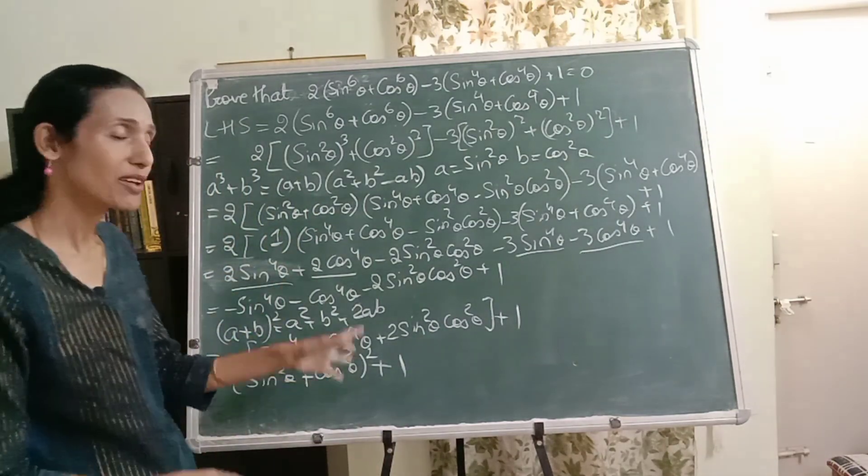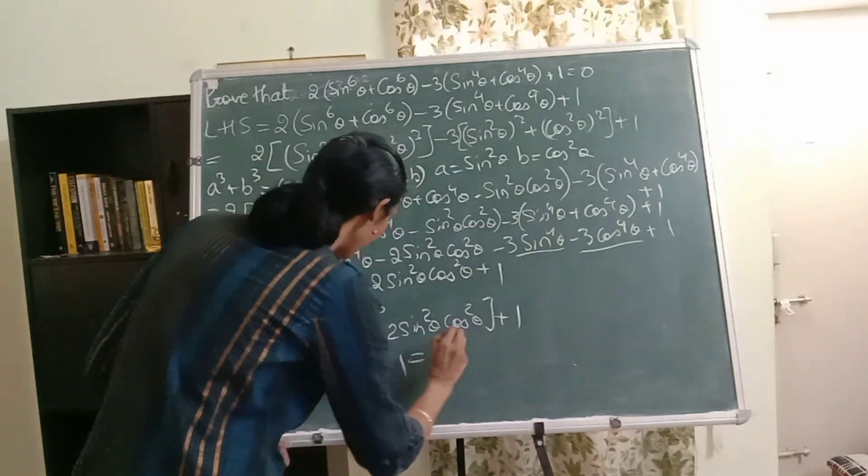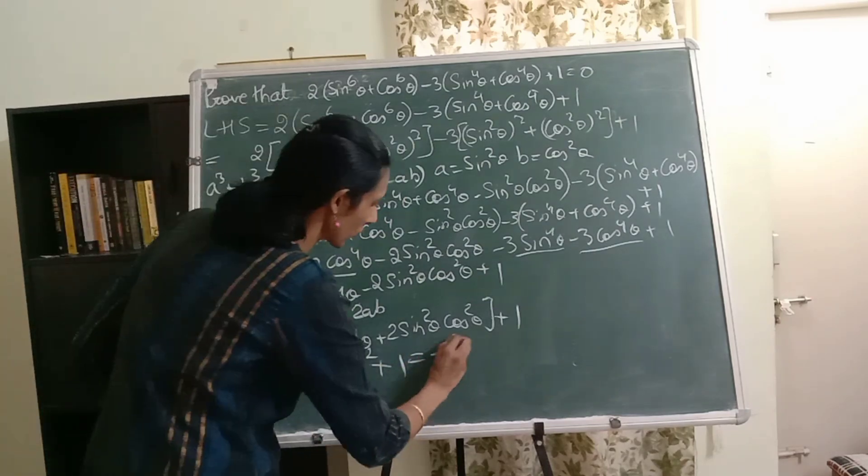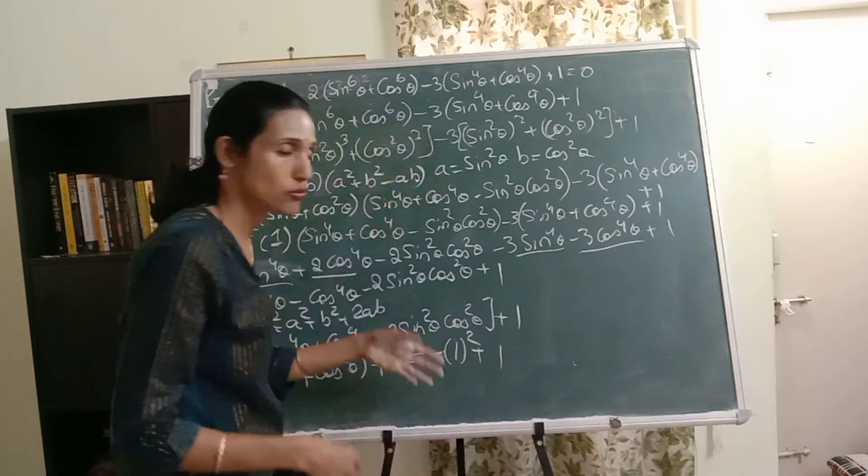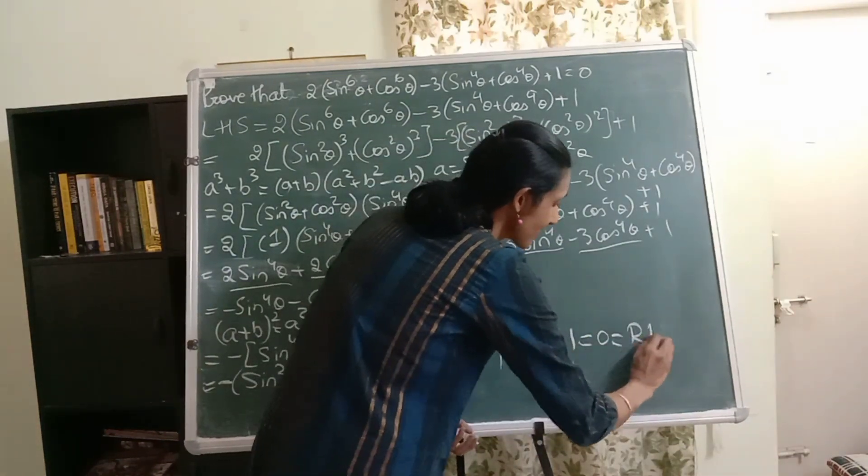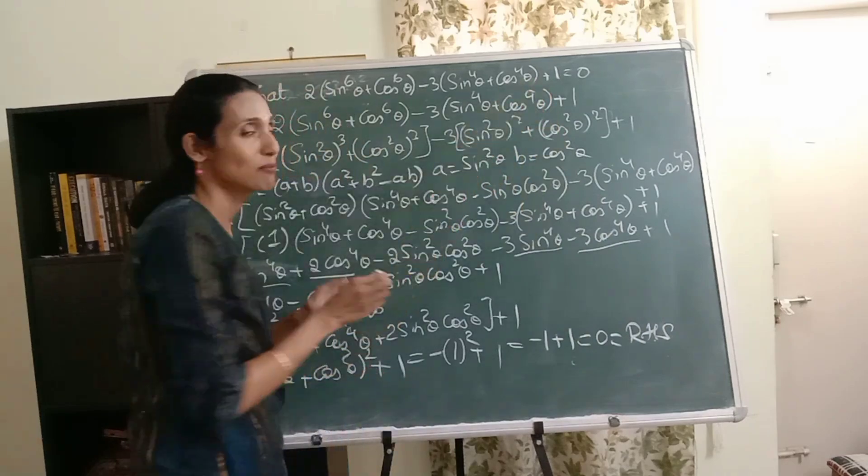Now again identities. What is it? Sine square theta plus cos square theta is 1. Surely that's great. Minus 1. And this is squared. Plus 1. Of course 1 square is again 1. So minus 1 plus 1 which is 0 which is my right hand side. That's amazing. Right?